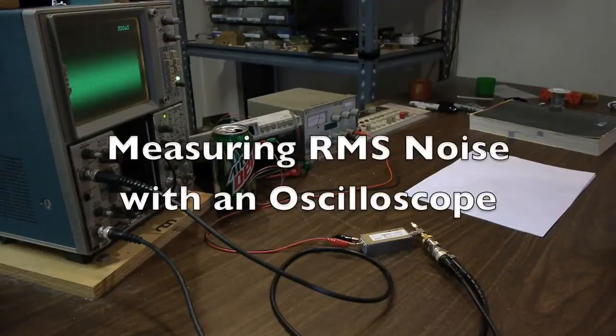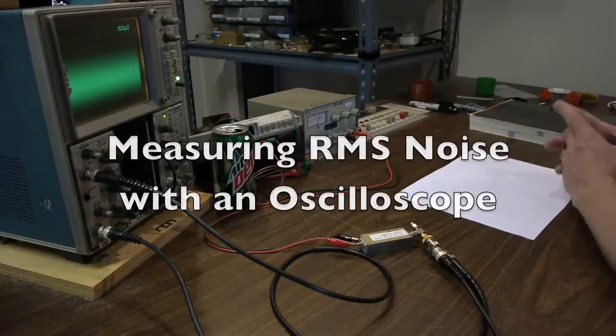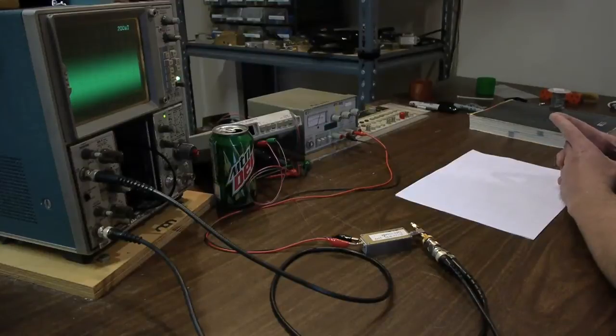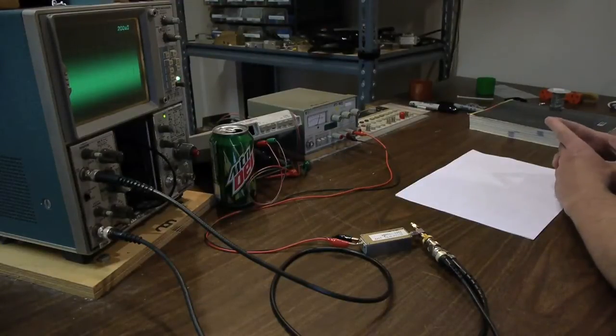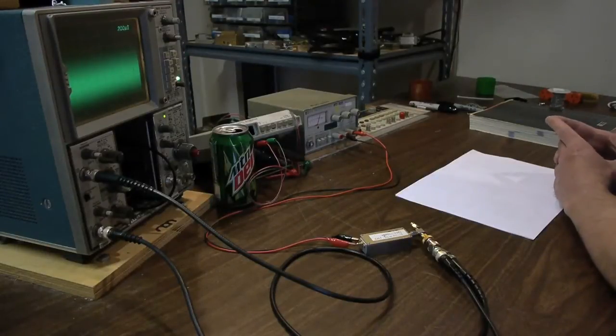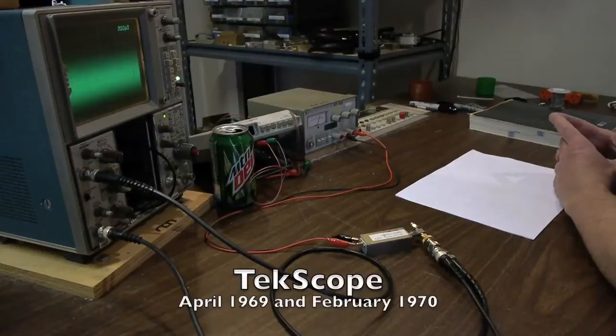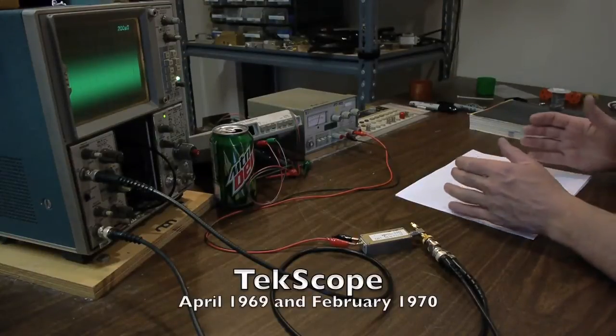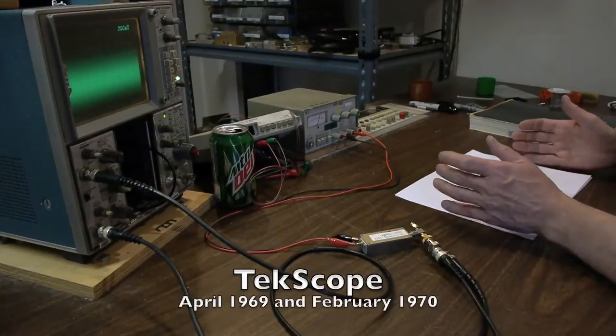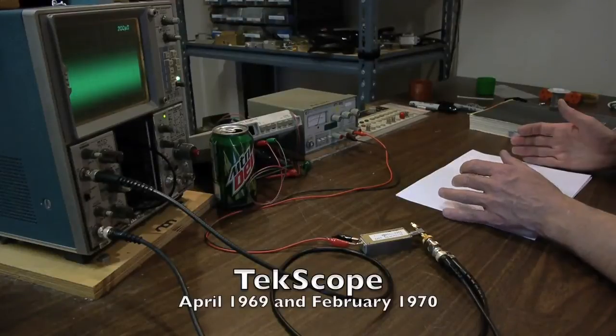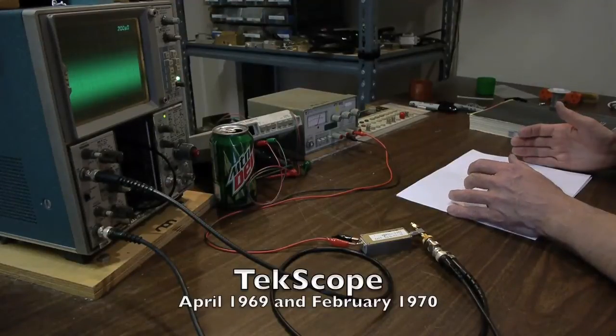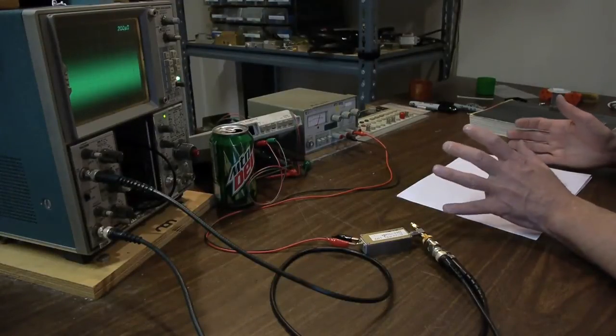We have a demonstration here of a very clever technique using a Tektronix 7603 analog oscilloscope to measure the RMS value of a noise wave. I certainly did not invent this technique. I learned about it from a publication called Techscope, which was a series of applications notes published by Tektronix. And this idea appears in the April 1969 and February 1970 issues, kind of retro.